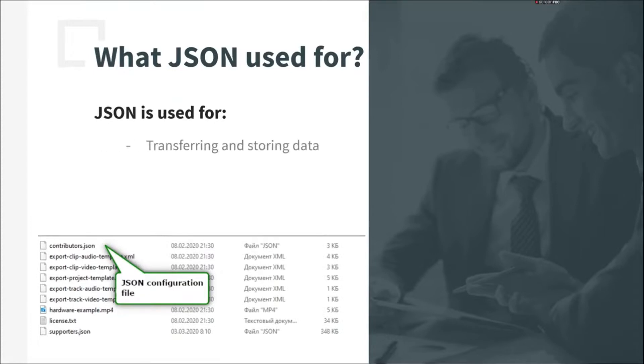JSON could be used for saving or transferring data between different computer systems. Data encoding for different kinds of API, such as REST API, GraphQL, etc. And configuration files.